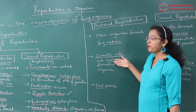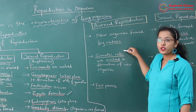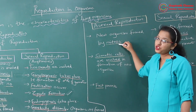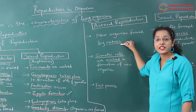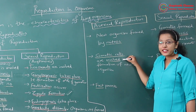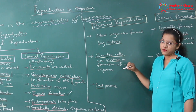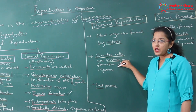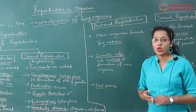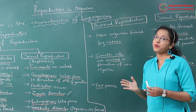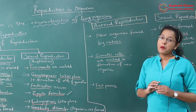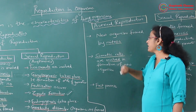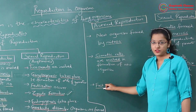Further points of asexual reproduction: whatever new organisms are formed, they are formed by mitosis division, and body cells — that is, somatic cells — are involved in the formation of new organisms. As the body cell is involved, the new organism formed is altogether a carbon copy of the parent organism. As there is no gamete formation in asexual reproduction, this process is quite fast.